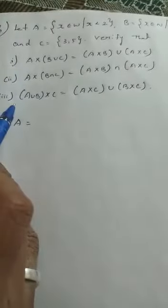Sixth sum, let A is given, B is given and C is given. You have to verify in these three sums are there. Now first we have to find it. What are the elements in set A? What is given here?